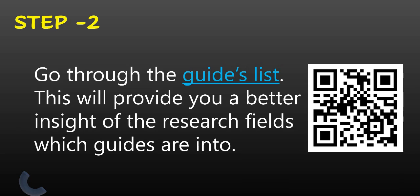In step 2, you have to go through the guides list. This is another important step because this will provide you a better insight of the research fields which your guides are into. And if your area of interest matches with the area of the guide that is there in the guides list, you can choose that guide. You can scan this QR code to get the link of the guides list.